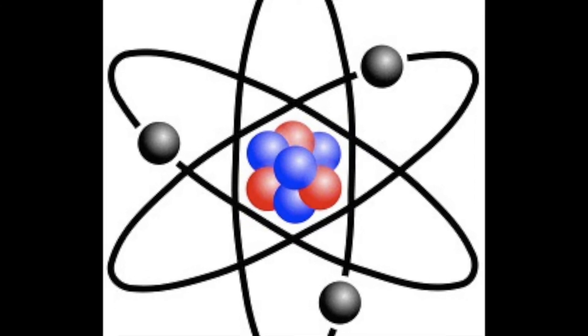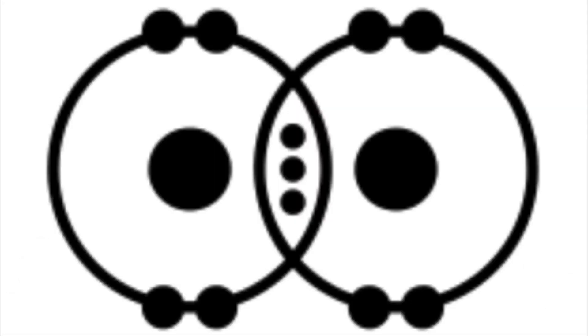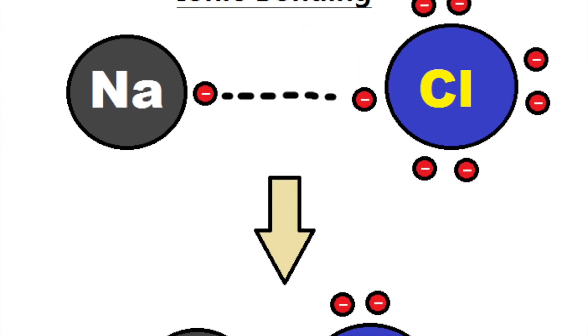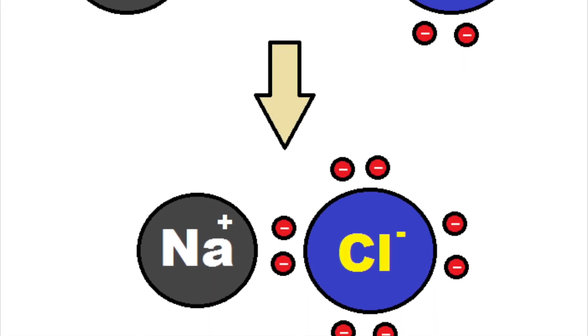When atoms react they take part in changes which give them a stable arrangement of electrons. They can do this by covalent bonding which is sharing electrons and ionic bonding which is transferring electrons. I'll link our videos below so you can watch them after.